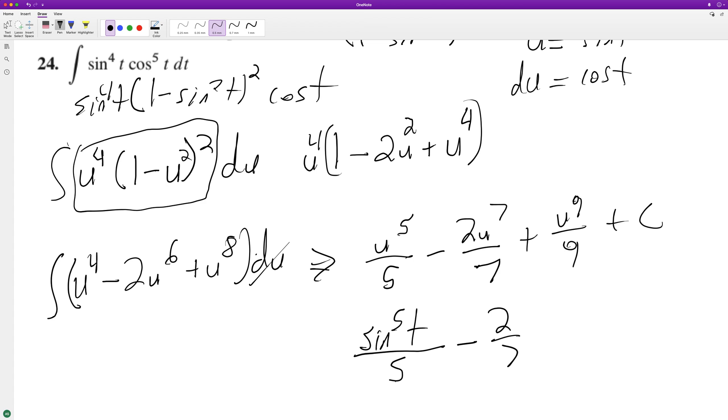Minus two to the seventh, sine raised to the seventh t, plus sine raised to the ninth of t over nine plus c. That's it.